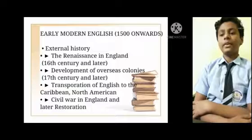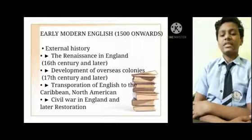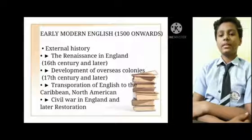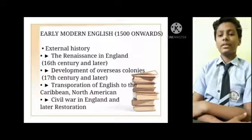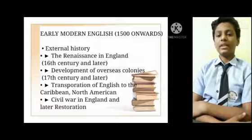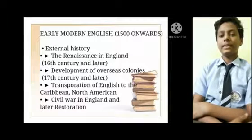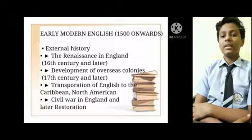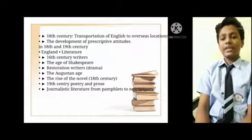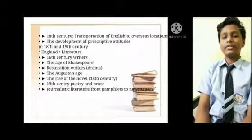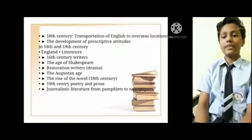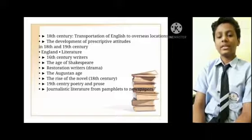Early Modern English: 1500 AD onwards. External History: The Renaissance in England, 18th century and later. Development of overseas colonies, 17th century and later. Transformation of English to the Caribbean and North America. Fourth, civil war in England and later restoration, 18th century. Transportation of English to overseas locations. Fifth, the development of prescriptive attitudes in 18th and 19th century England.